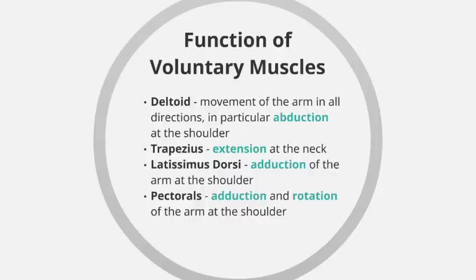The latissimus dorsi is responsible for adduction of the arm at the shoulder, where the arm moves inwards towards the midline of the body. A good example would be in netball: if a ball is thrown high, you reach your arms out and as you catch it you bring the ball in towards your chest, with the upper arm being brought into the midline of the body.